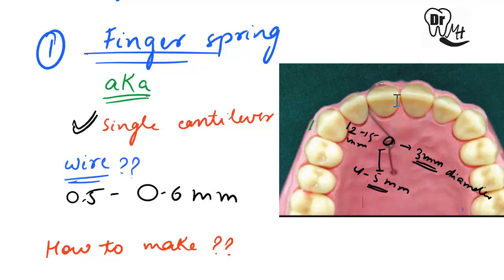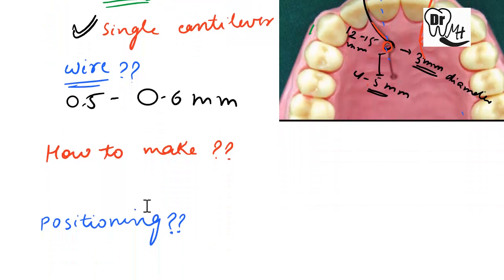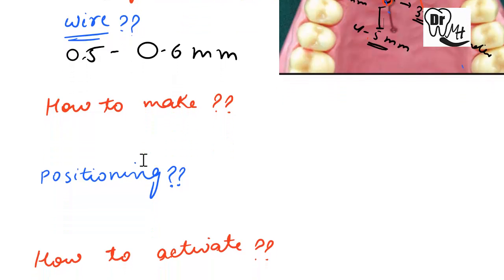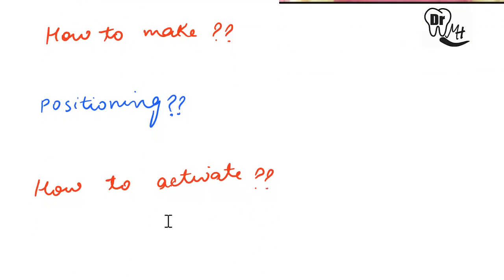Regarding positioning, the helix should be opposite to the intended direction of tooth movement. If you want to move the teeth to one side, the helix should be on the opposite side. It should also be towards the long axis. The finger spring is constructed from 0.5 to 0.6 mm wire, and next we will study how to activate them.